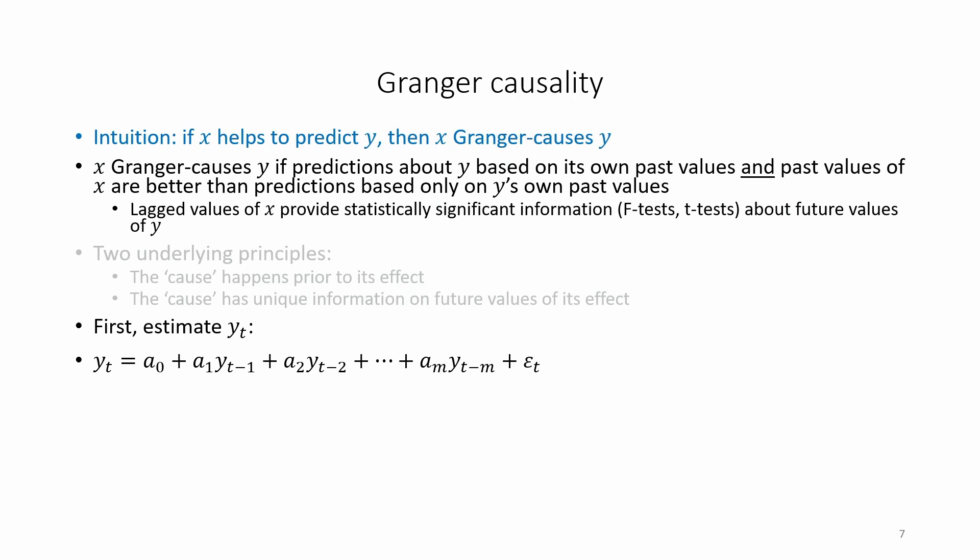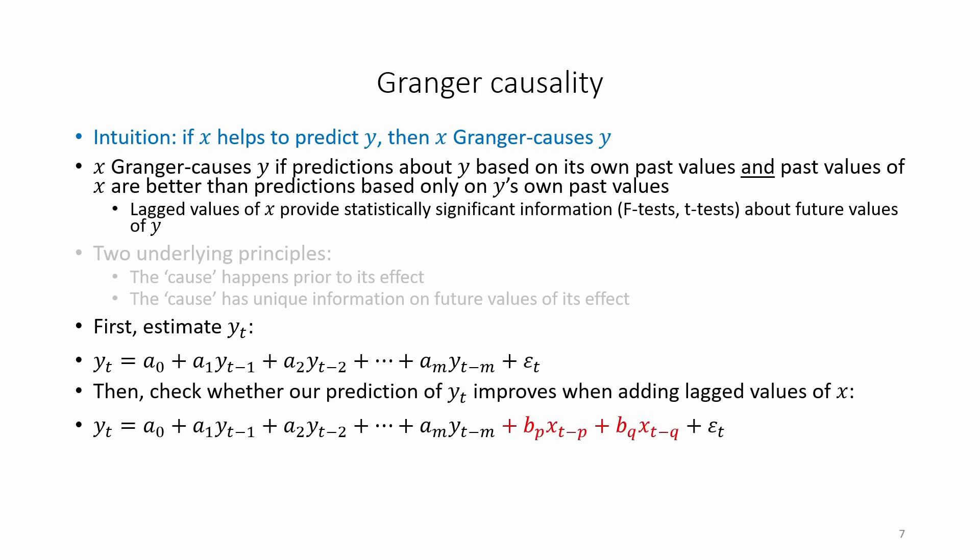The possible presence of Granger causality can be investigated in the following way. First, estimate yt in the following equation. Then check whether our prediction of yt improves when adding lagged values of x in the following equation.